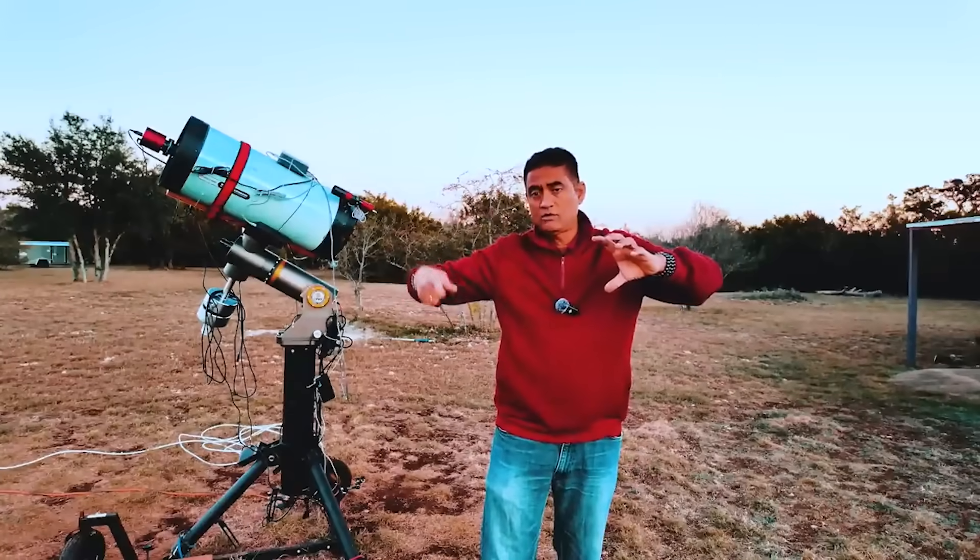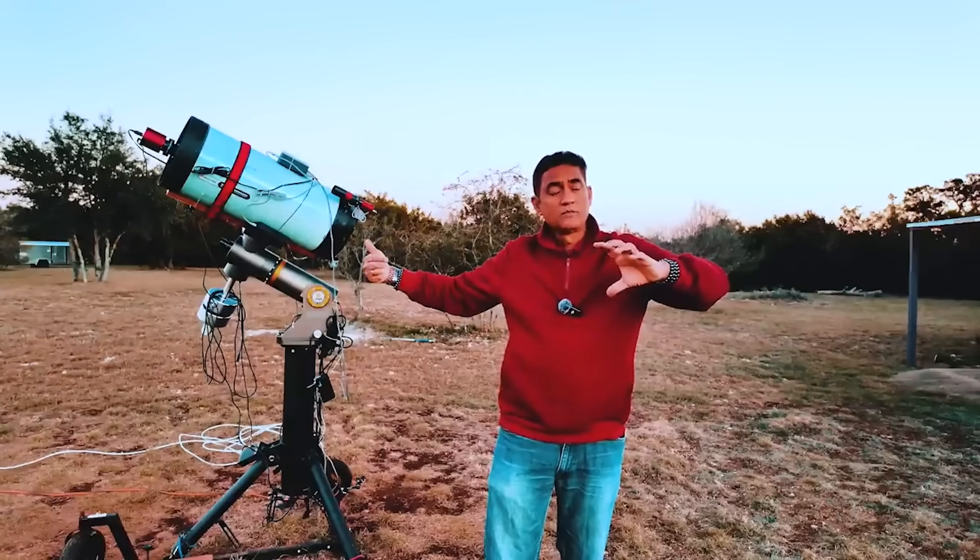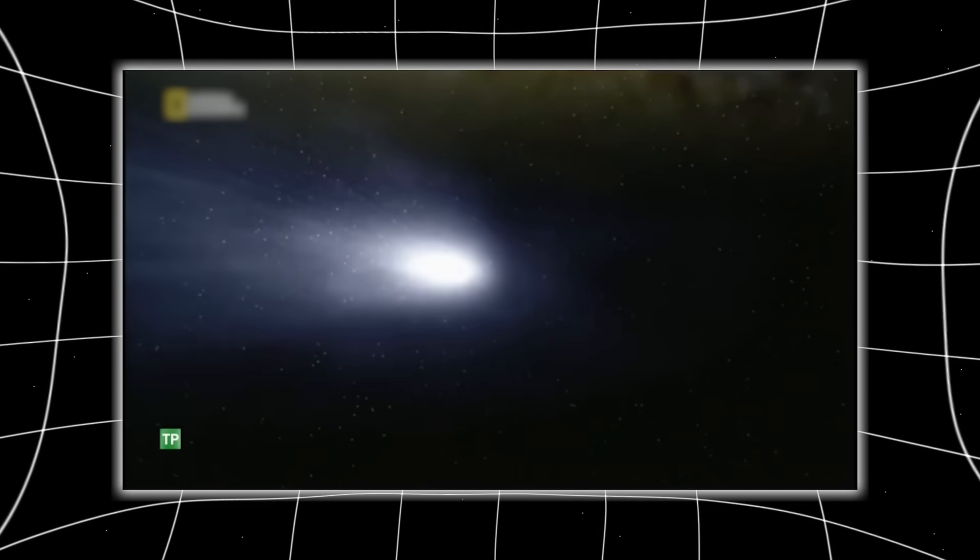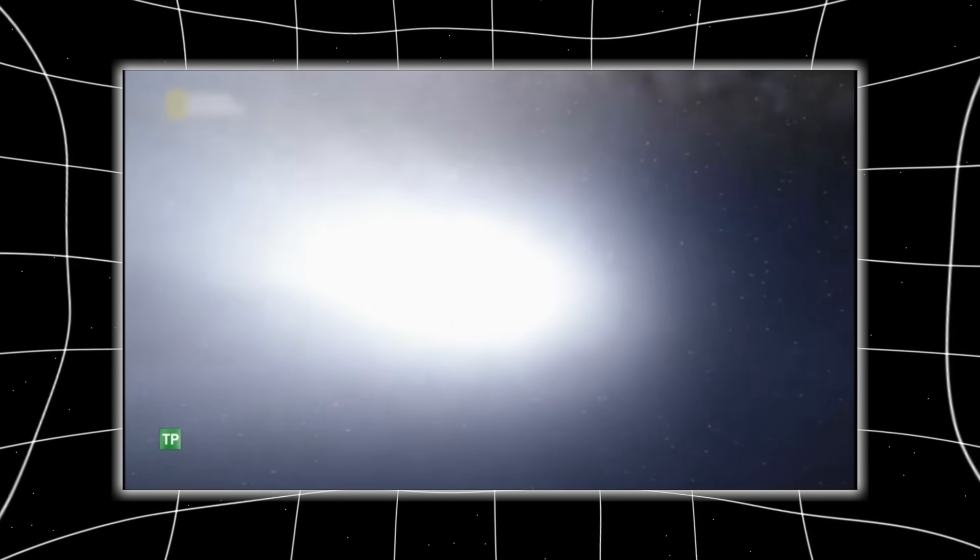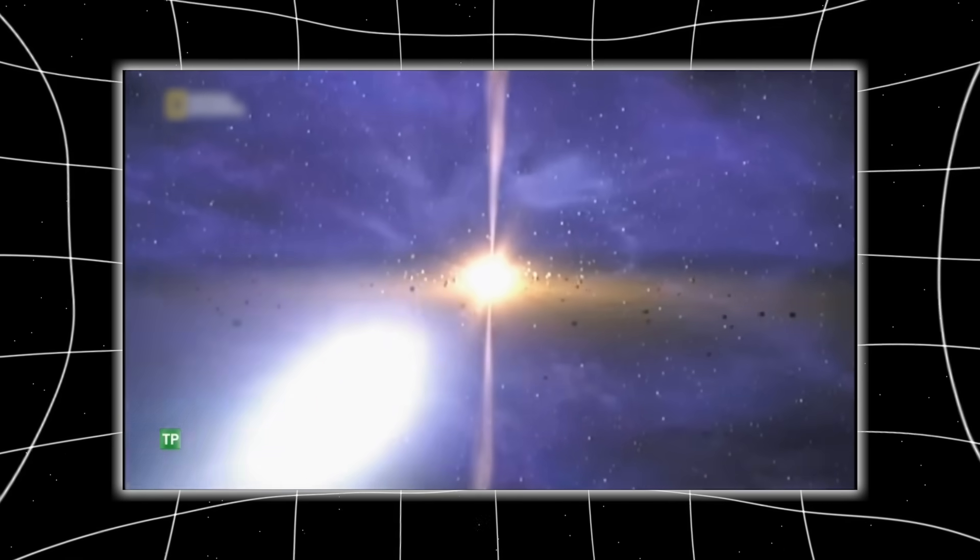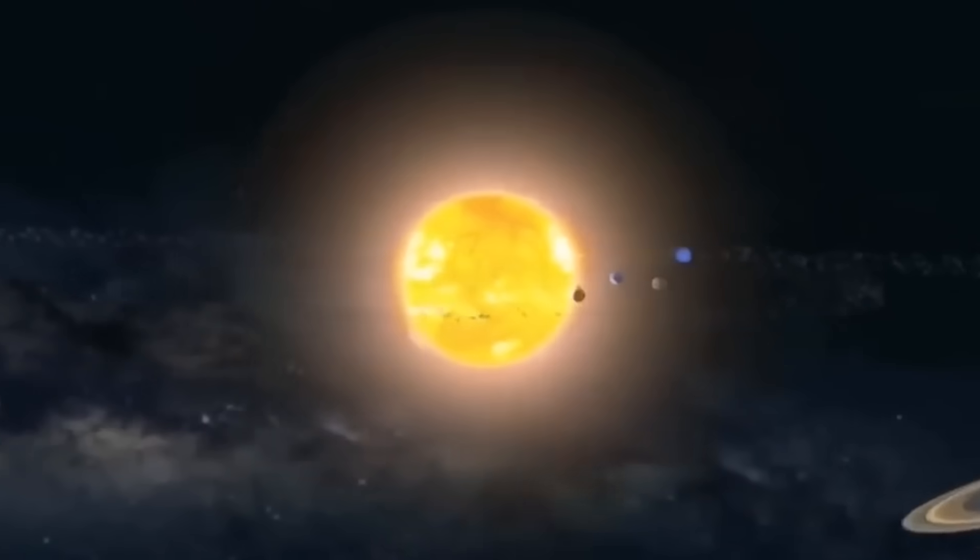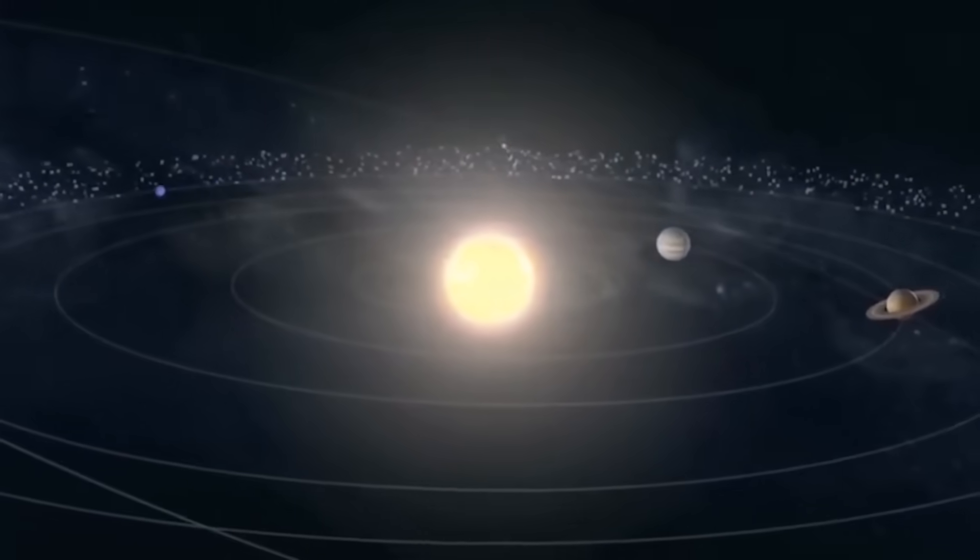Ray stresses that the only way to truly understand the 400 times brightness surge is to contextualize it with scale. This isn't just a bright comet because of chemistry. It's bright because it is huge, one of the largest ever recorded, and it comes from an alien star system. The combination makes it a scientific treasure, a once-in-a-lifetime chance to study the material of another solar system before it disappears forever.